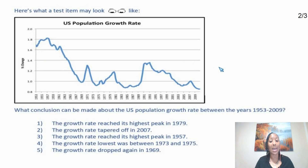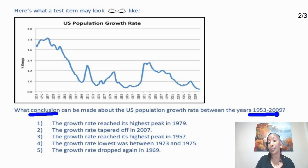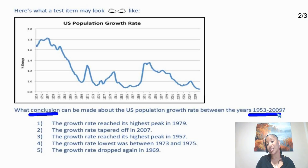Now that you have familiarized yourself with your chart, you want to revisit your question. What conclusion can be made about the U.S. population growth rate between the years 1953 through 2009? We can underline the word "conclusion" because this tells us we're going to draw a conclusion about this chart as it pertains to the U.S. population growth rate. When answering this question, take the entire chart into consideration, since these are the years you'll refer to.